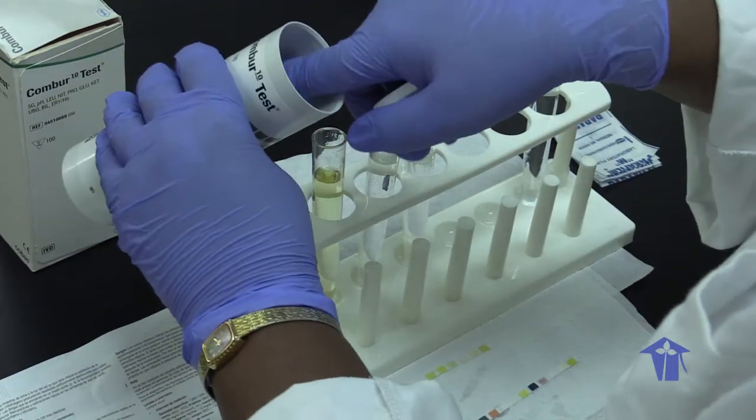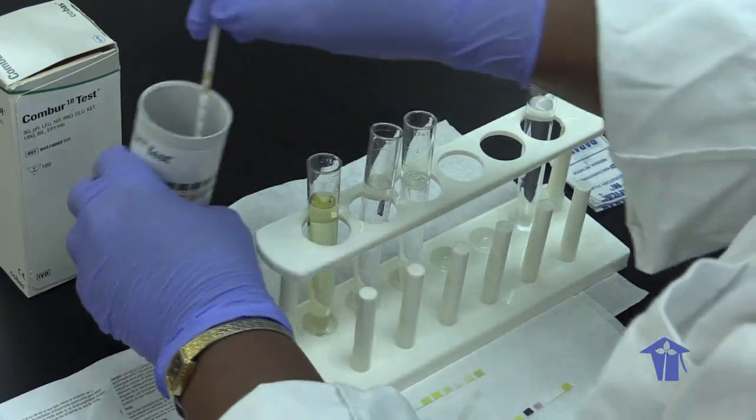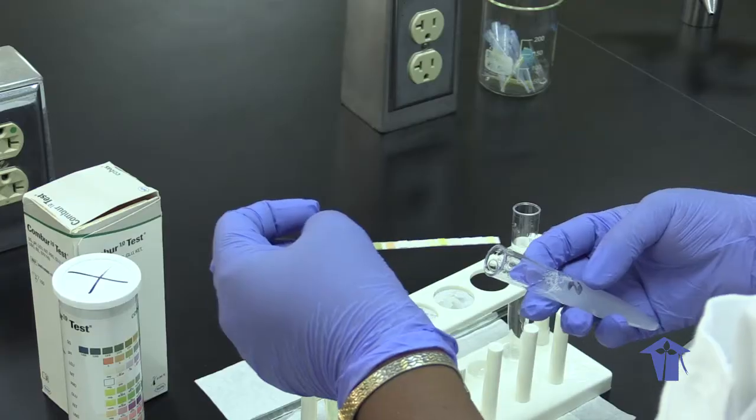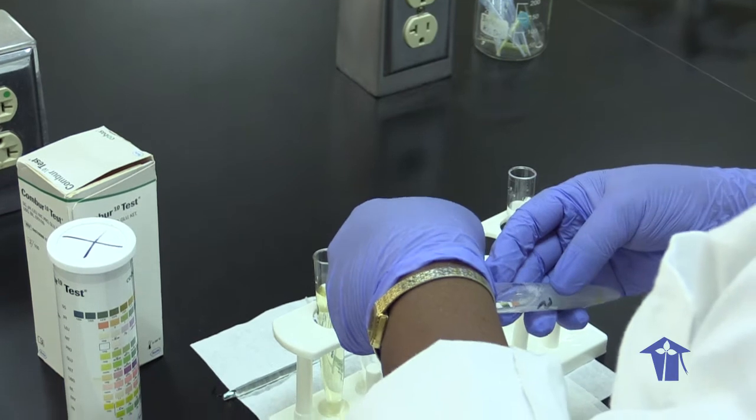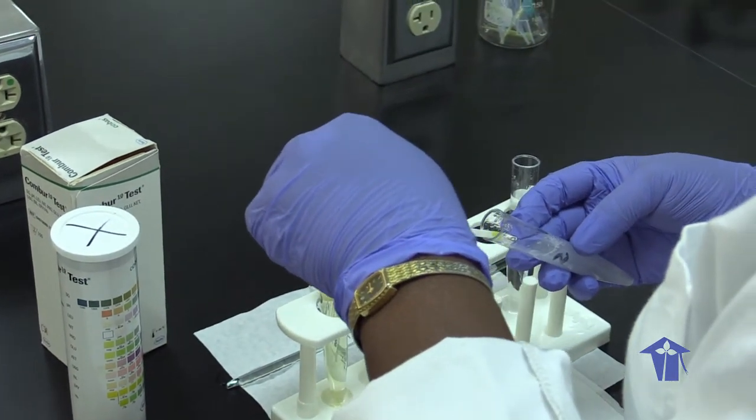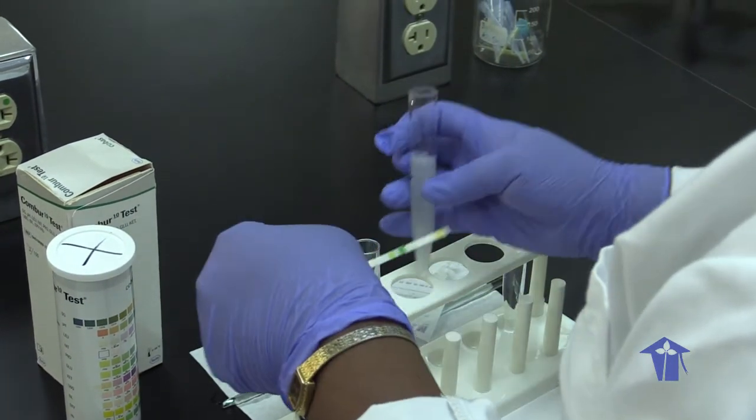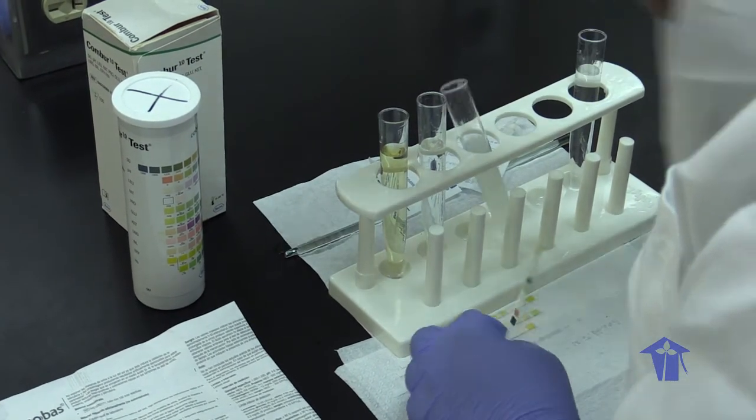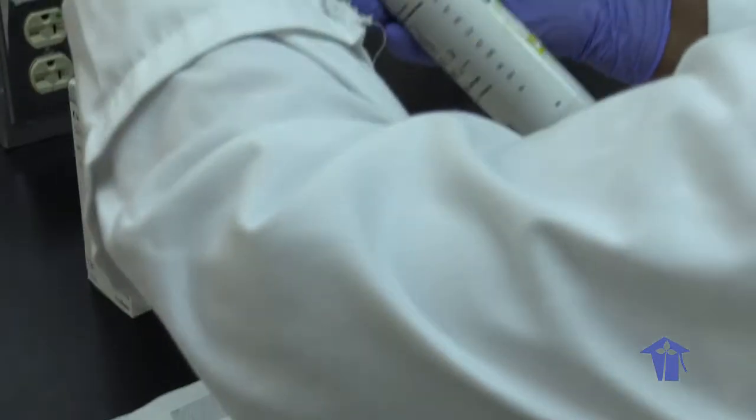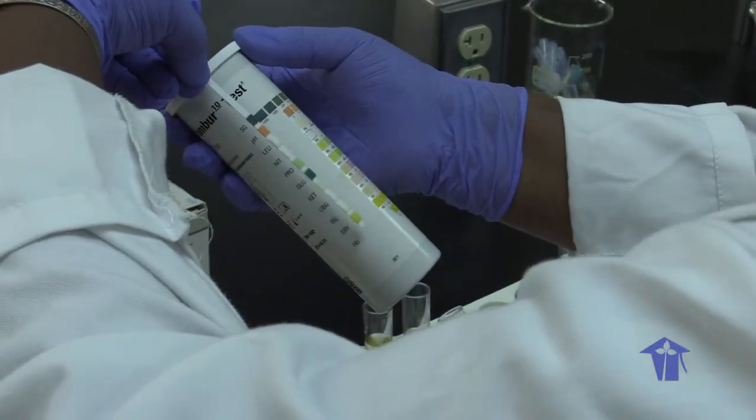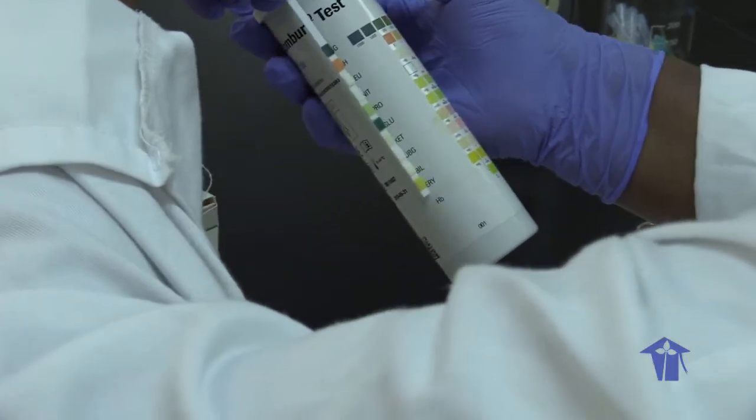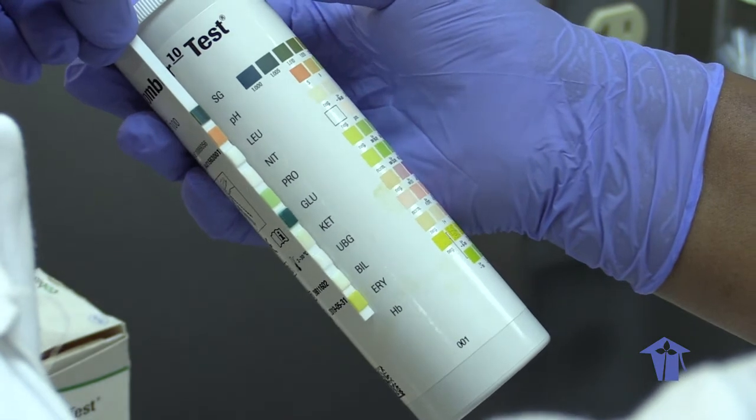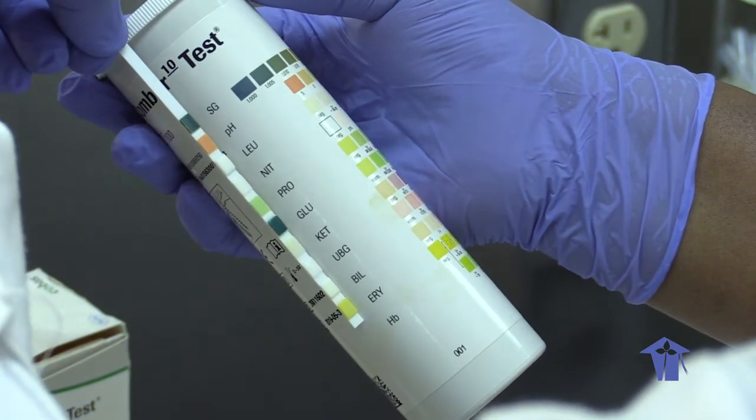Third urine. Okay, this one, specific gravity is 1, pH 5, but we have a positive protein and a positive glucose.